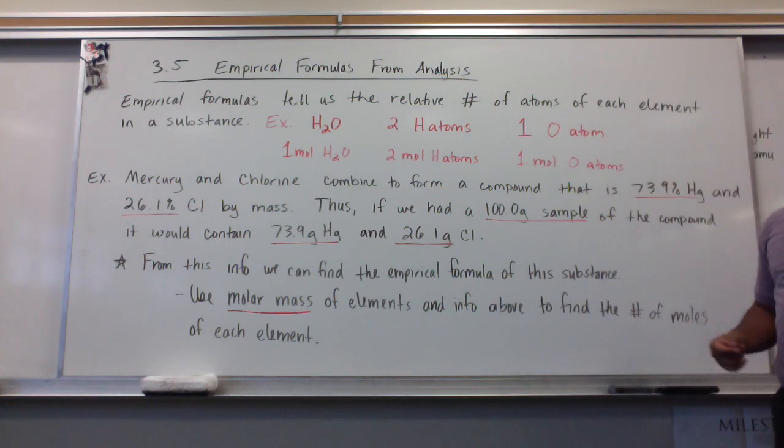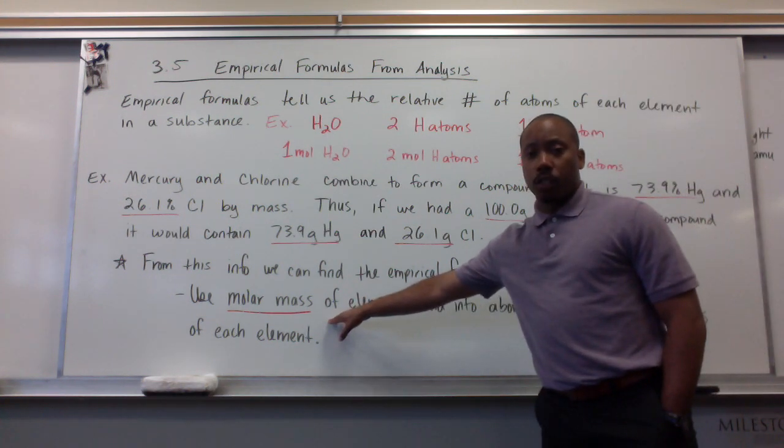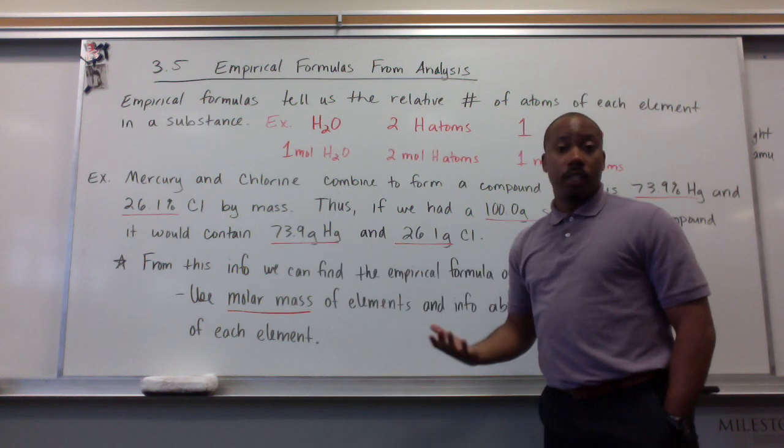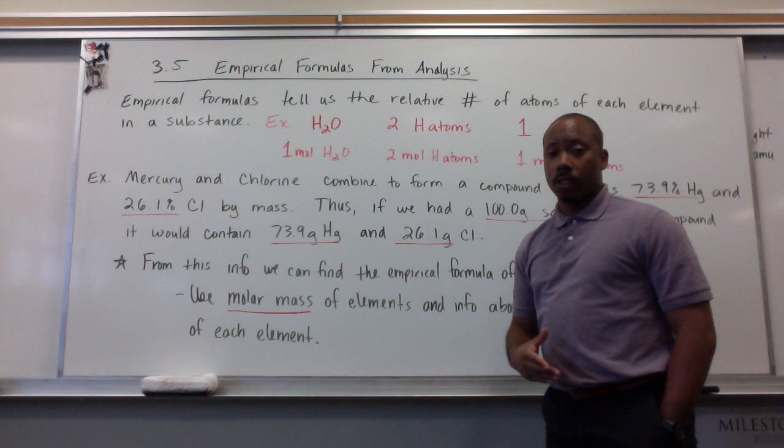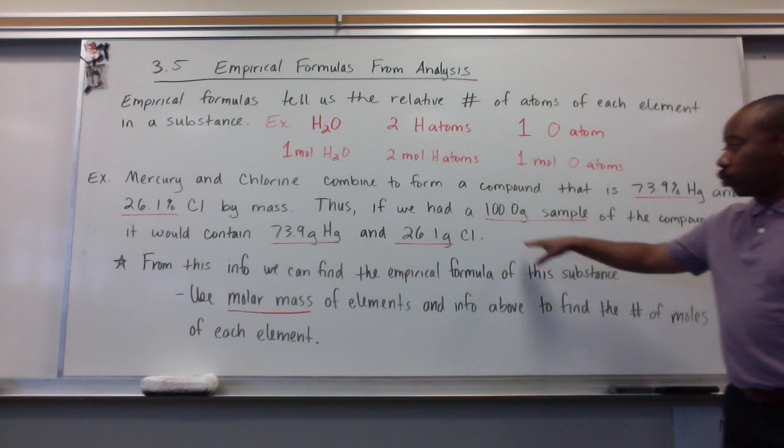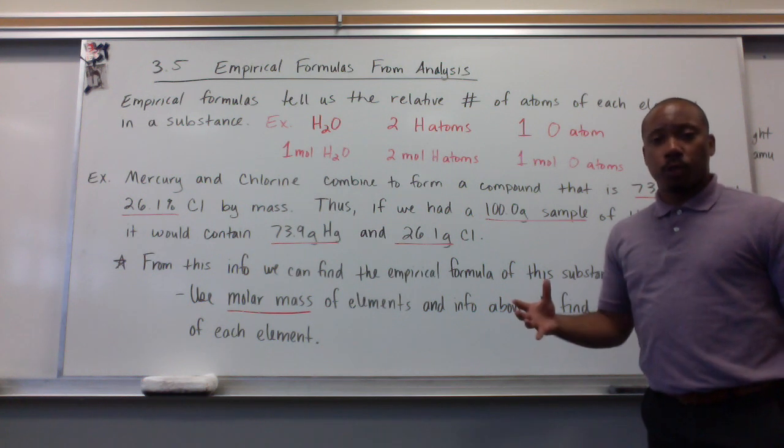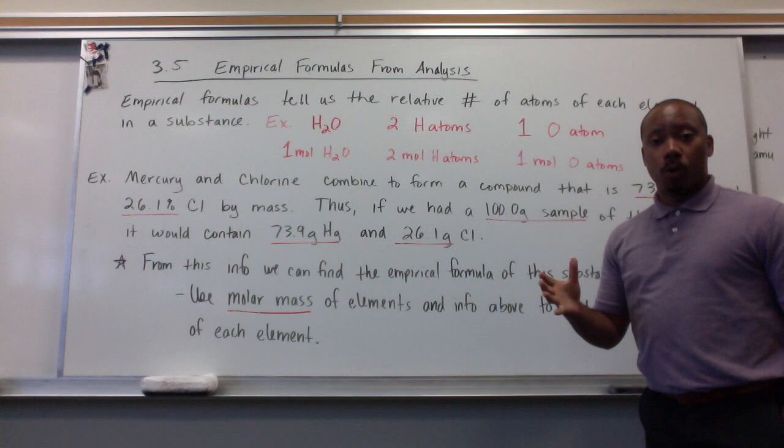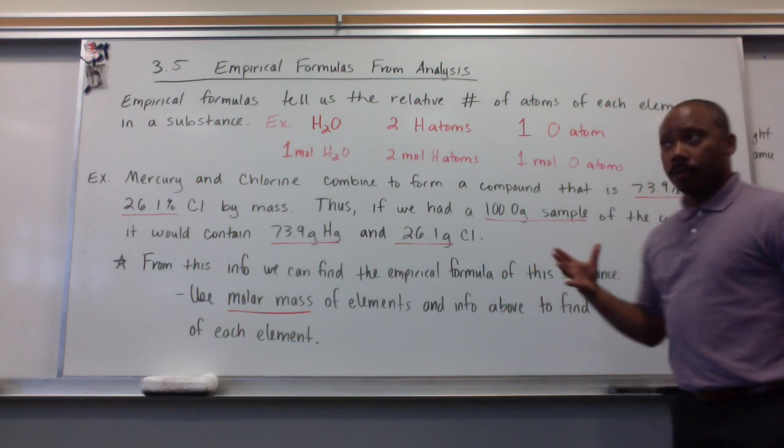From this information, we can find the empirical formula of this substance. What we have to use is the molar mass, which is basically like the formula weight, just different units of grams for every one mole of that substance. And we use the information above, given to us here, assuming our 100-gram sample. We want to find the number of moles of each substance. Remember this as we go through this stoichiometry chapter, that everything must go through moles. Moles is the middleman of pretty much every problem that we're going to face.